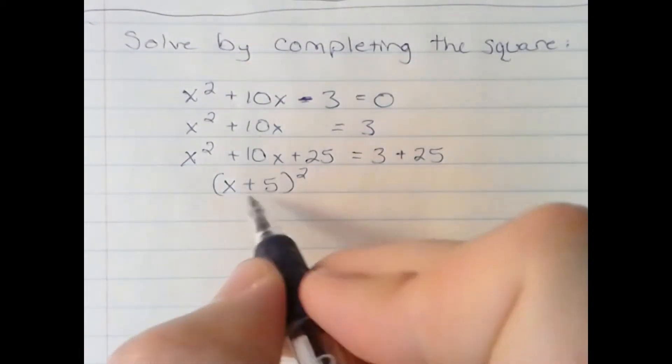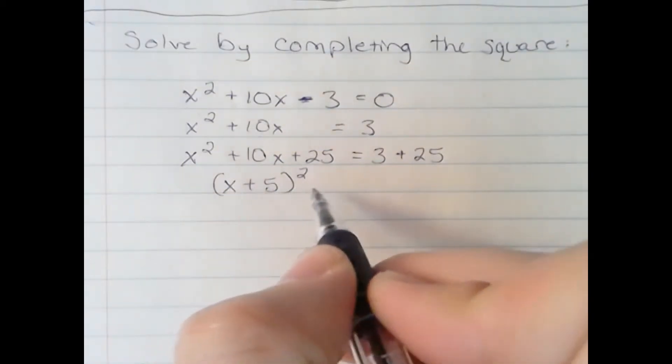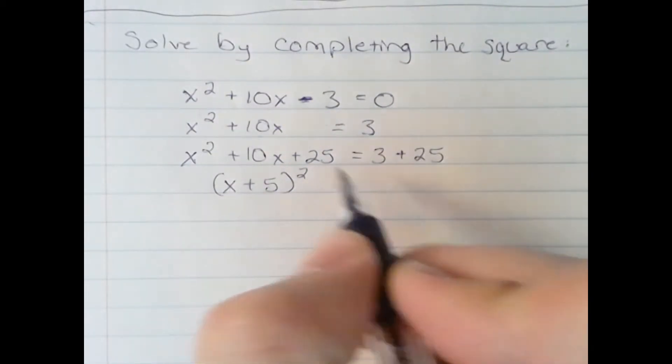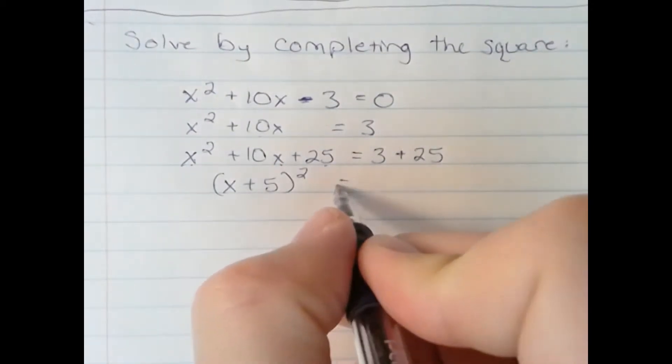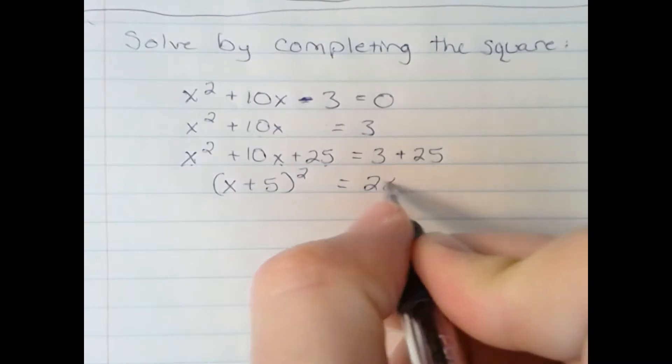And you can always check by taking x plus 5, multiplying it by itself using the FOIL method. And it will be the same as x squared plus 10x plus 25. On the right side of the equation, we have 28.